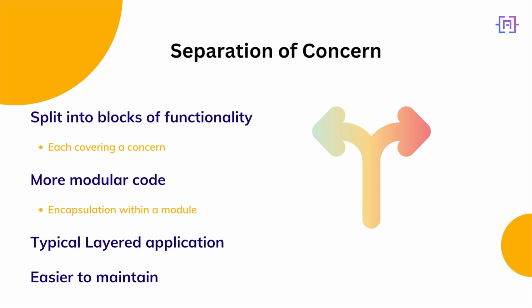Separation of concerns is another key principle. Separation of concerns is also part of the SOLID principles. At its core, it states that we need to write our application split up into different blocks of functionality, each covering a separate concern. A concern could be anything, but each block should just be doing one single job. Don't write large chunks of code that do everything at once.